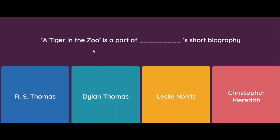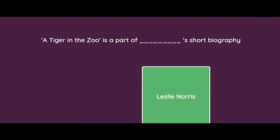'A Tiger in the Zoo' is a part of the anthology by — R.S. Thomas, Thomas Dylan, Leslie Norris, or Christopher Meredith? The answer is Leslie Norris. Thank you children for watching — have a lovely day!